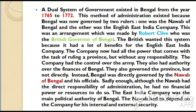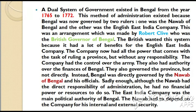Although the Nawab had the direct responsibility of administration, he had no financial power or resources to do so. The English East India Company was the main political authority of Bengal. The Nawab had to depend on the company for his internal and external security. It must be noted that Nazamuddin Ali Khan, who was the second son of Mir Jafar, was the Nawab of Bengal, Bihar and Orissa when the dual system of government was first introduced.